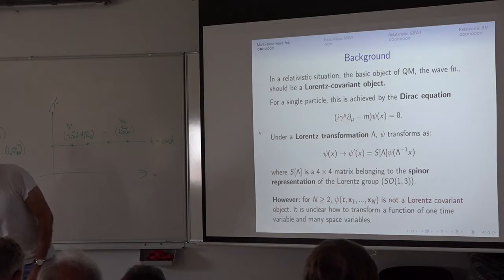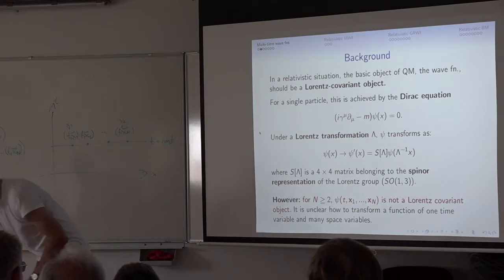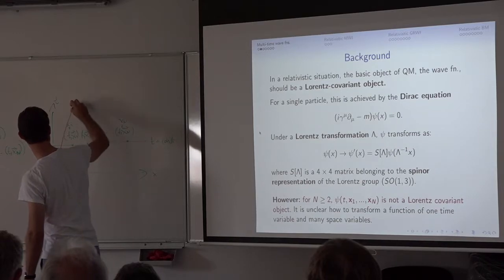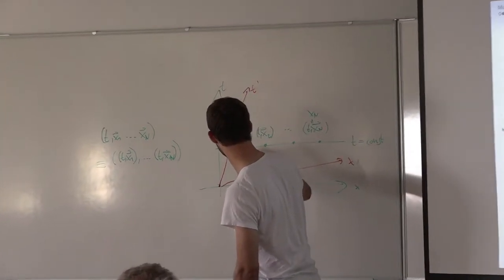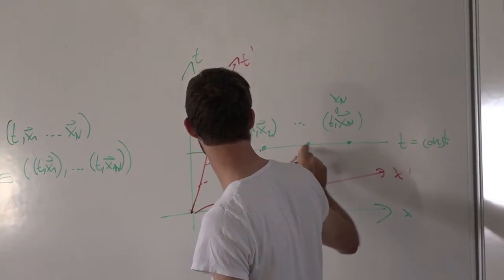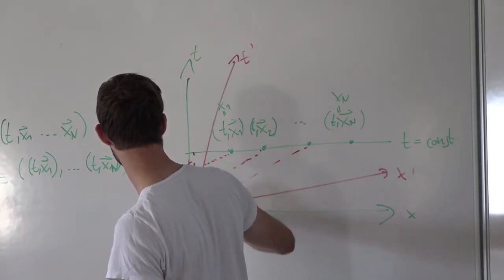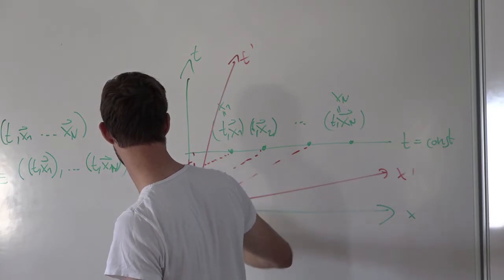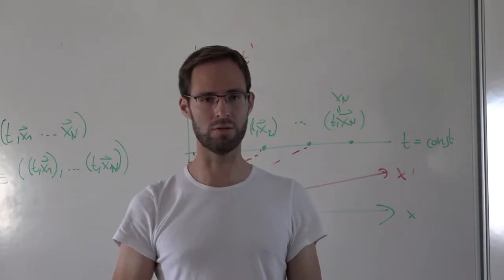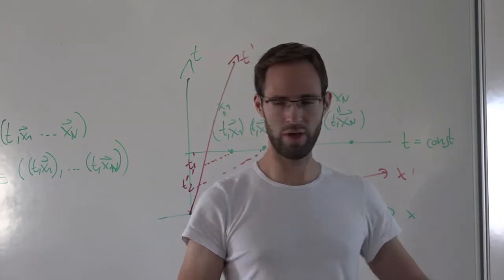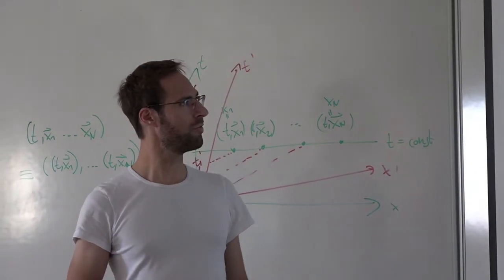We can transform these into a different frame. A different frame would have axes x-prime and t-prime, and if you now read off the coordinates by taking parallel lines, you see that the time coordinates will all come out different — t1-prime, t2-prime, and so on. So after a Lorentz transformation, the new coordinates won't be simultaneous anymore. Well, I guess we should have a wave function which lives on arbitrary space-like spacetime configurations. That is the idea of multi-time wave functions, actually due to Dirac, and further taken up by Tomonaga-Schwinger.